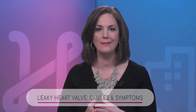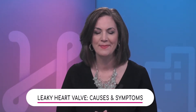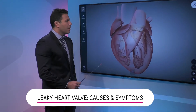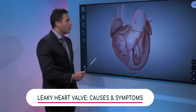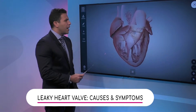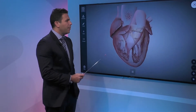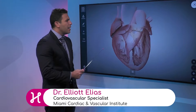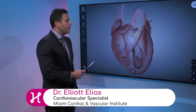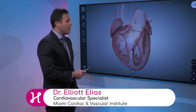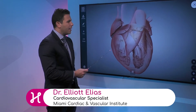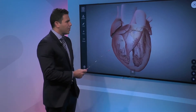A leaky valve — the two main types of valve disease are stenosis or regurgitation. Stenosis means that your valve is too closed and you're not able to pass blood normally through the valve. Leakiness means that the valve is not closing in the right way, and instead of blood going forward, it's actually going back into the chambers of the heart.